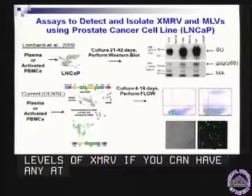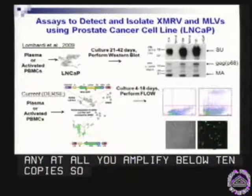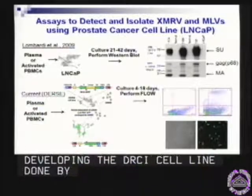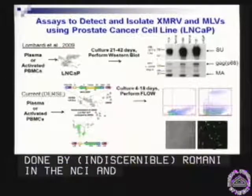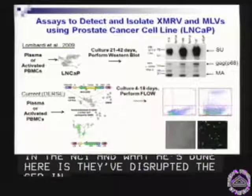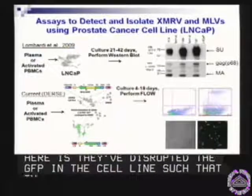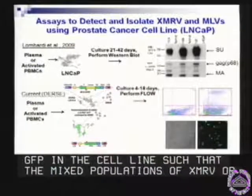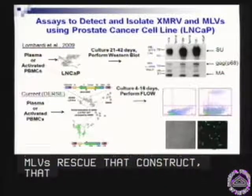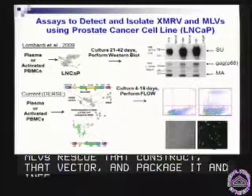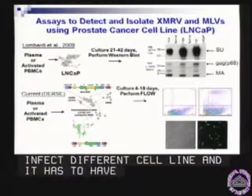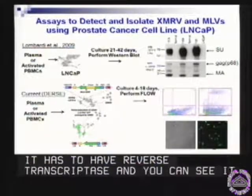Currently in development, we're developing what we call the DERC cell line, done by Vineet Kewal-Rahmani at the NCI. What he's done is disrupt a GFP construct in the cell line such that mixed populations of XMRV or other replication-competent MLVs have to rescue that construct, package it, and infect a different cell line where it's expressed. It requires reverse transcriptase and integrase, and you can see it fluorescently either by flow cytometry or on a fluorescent microscope.